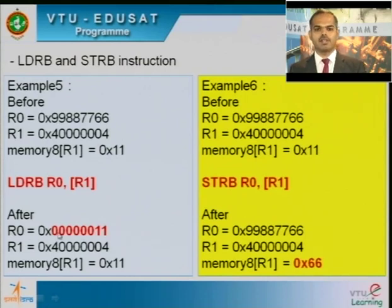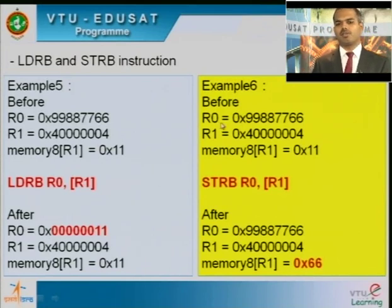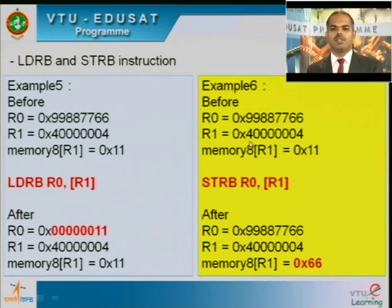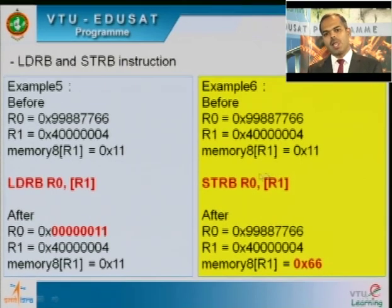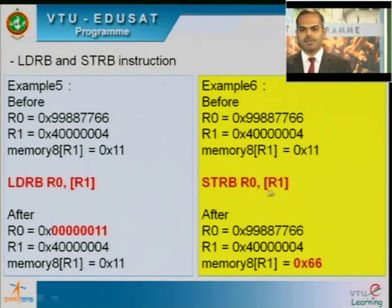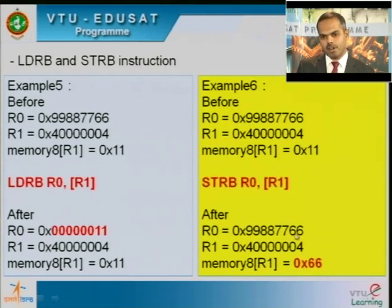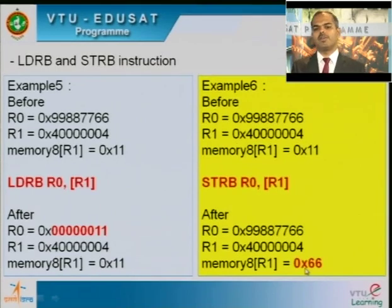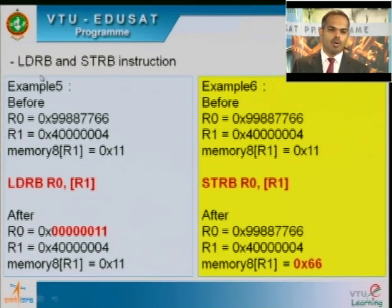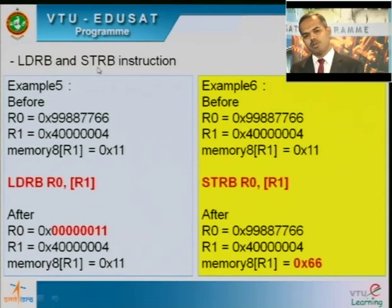Example 6 — STRB: Before execution, R0 = 0x99887766, R1 = 0x40000004, Memory8[R1] = 0x11. Instruction: STRB R0, [R1]. The lower byte of R0 — that is 0x66 — is stored to the RAM memory location pointed to by R1. LDRB and STRB are the load-register-with-a-byte and store-register-byte-to-memory instructions.